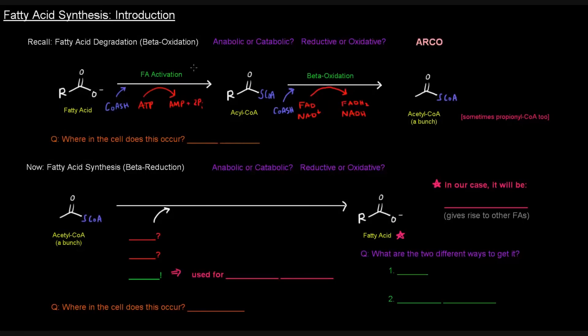So in this video, I want to talk about fatty acid synthesis. Before, when we talked about fatty acid metabolism, we specifically talked about fatty acid degradation, which was called beta-oxidation. That was when we took a fatty acid, activated it to an acyl-CoA, and then broke down this acyl-CoA via beta-oxidation to get a bunch of acetyl-CoAs, which were then used in the TCA cycle to give us NADHs and FADH2s for energy. So this process was a catabolic process.